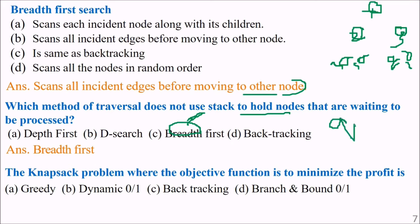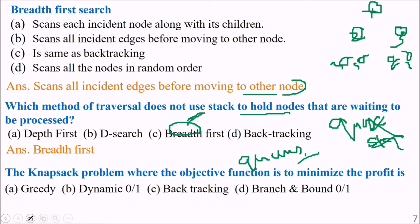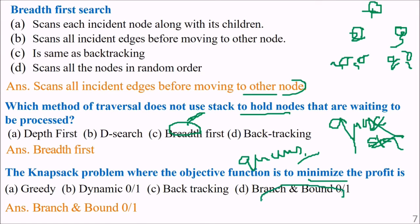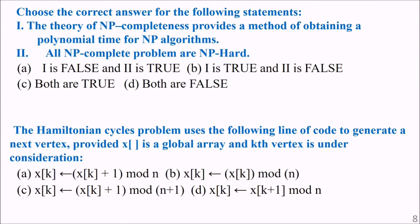Which traversal method does not use a stack to hold nodes waiting to be processed? BFS uses queues — not a stack. For the knapsack problem where the objective function is to minimize the profit, the answer is branch and bound zero-one knapsack.